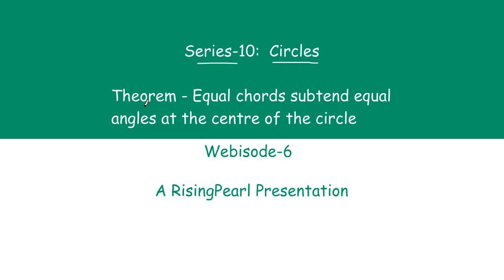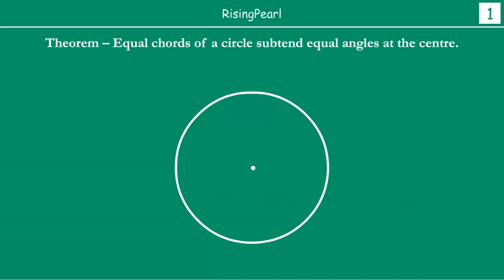This is the theorem that states that equal chords subtend equal angles at the center of the circle. The theorem again: equal chords subtend equal angles at the center of the circle. Let us prove why this theorem is always true.